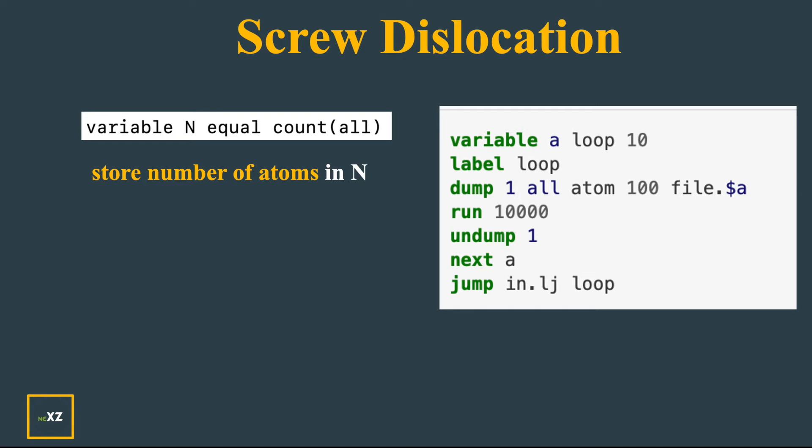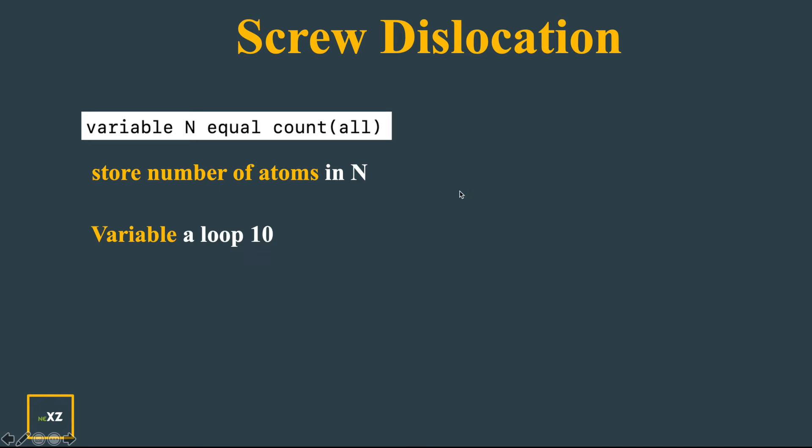So it starts with 1 and goes to 2. In between there are a few commands you can do - you dump some files, you run, and you undump so that you can use it again. It starts like this where you take some variable a and loop 10 - how many loops you want to do, 100,000 loops or some number.